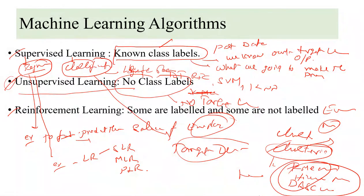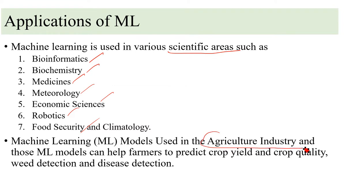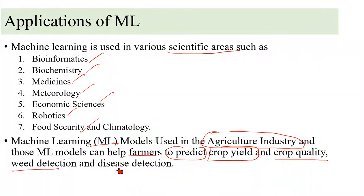In reinforcement learning, some data are labeled and some are not labeled. Machine learning is used in various scientific areas including bioinformatics, biochemistry, medicine, metallurgy, economic sciences, robotics, food security, and climatology. Machine learning models are mainly used in the agricultural industry — for example, models can help farmers predict crop yield, crop quality, weed detection, and disease detection.